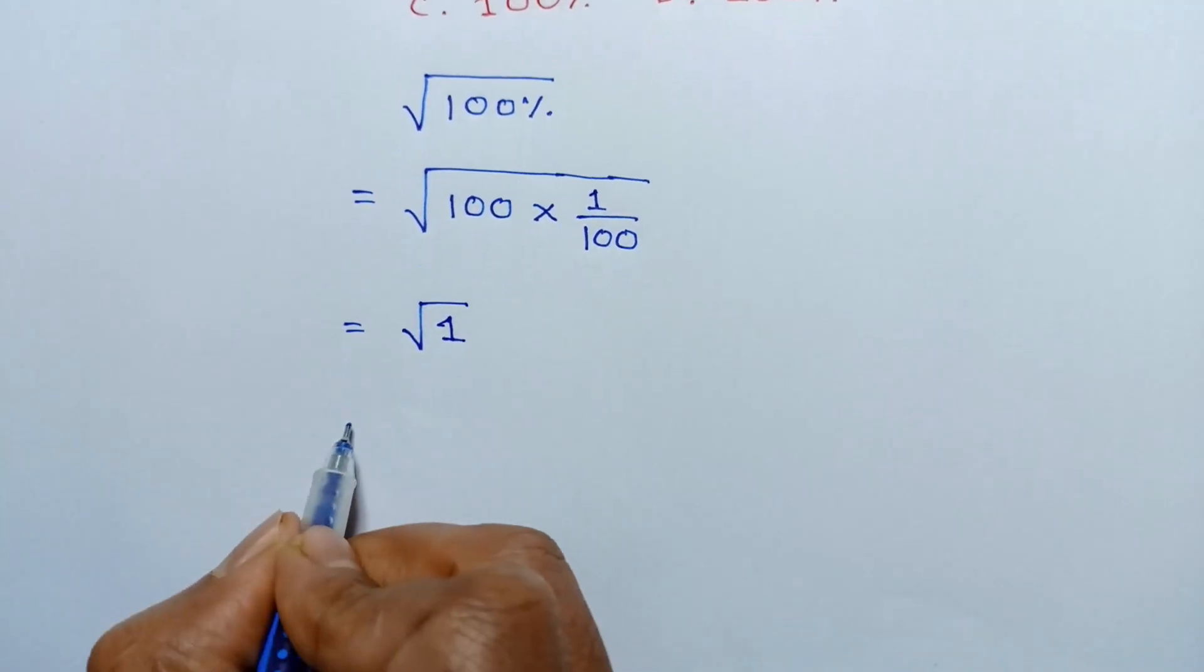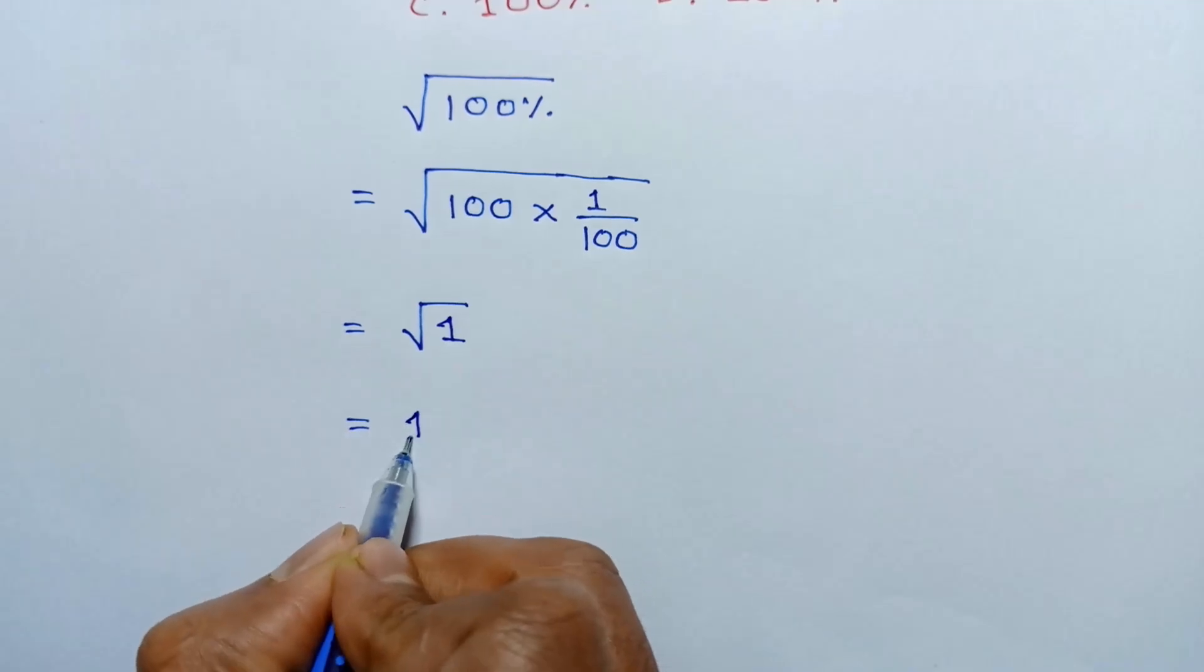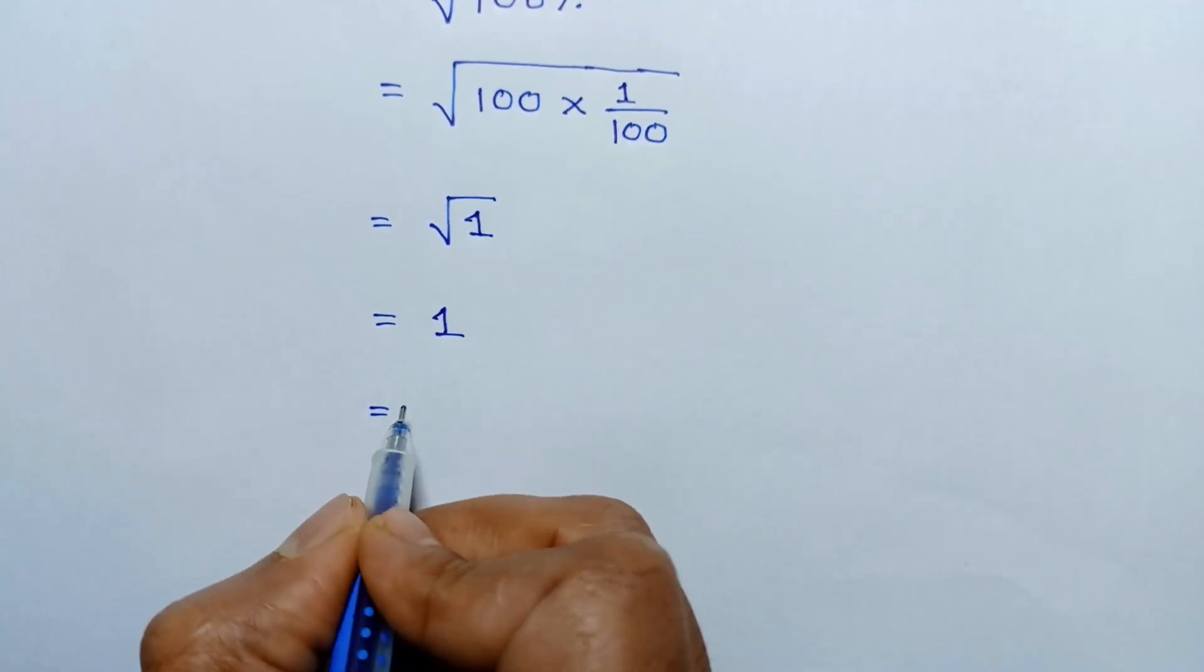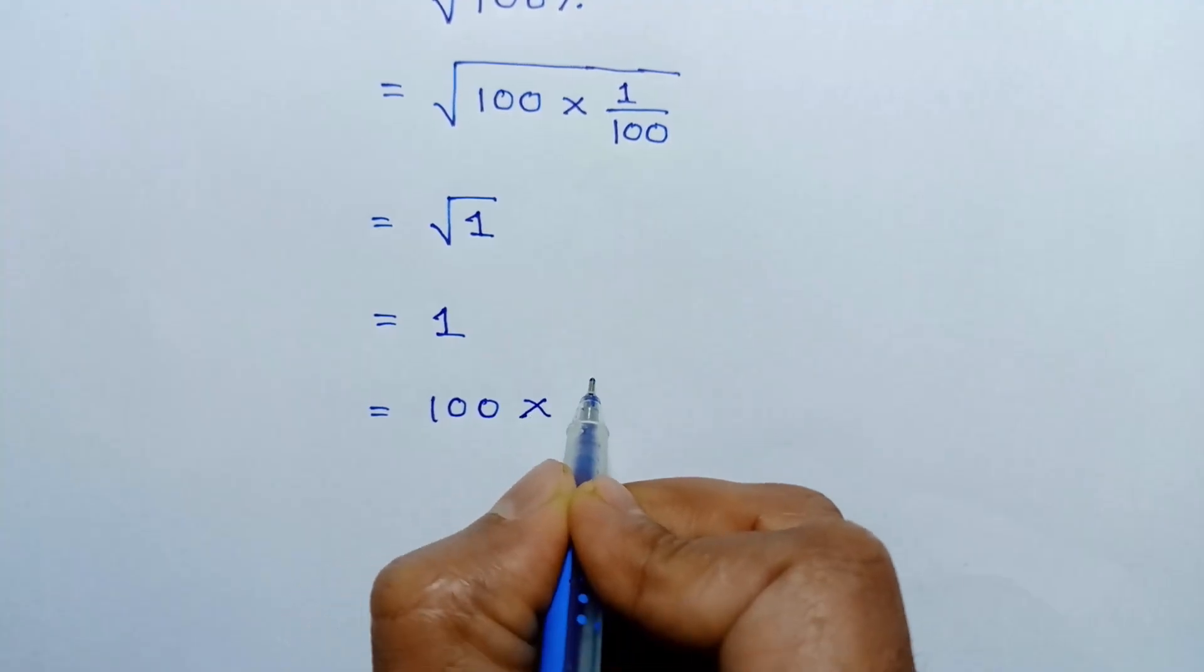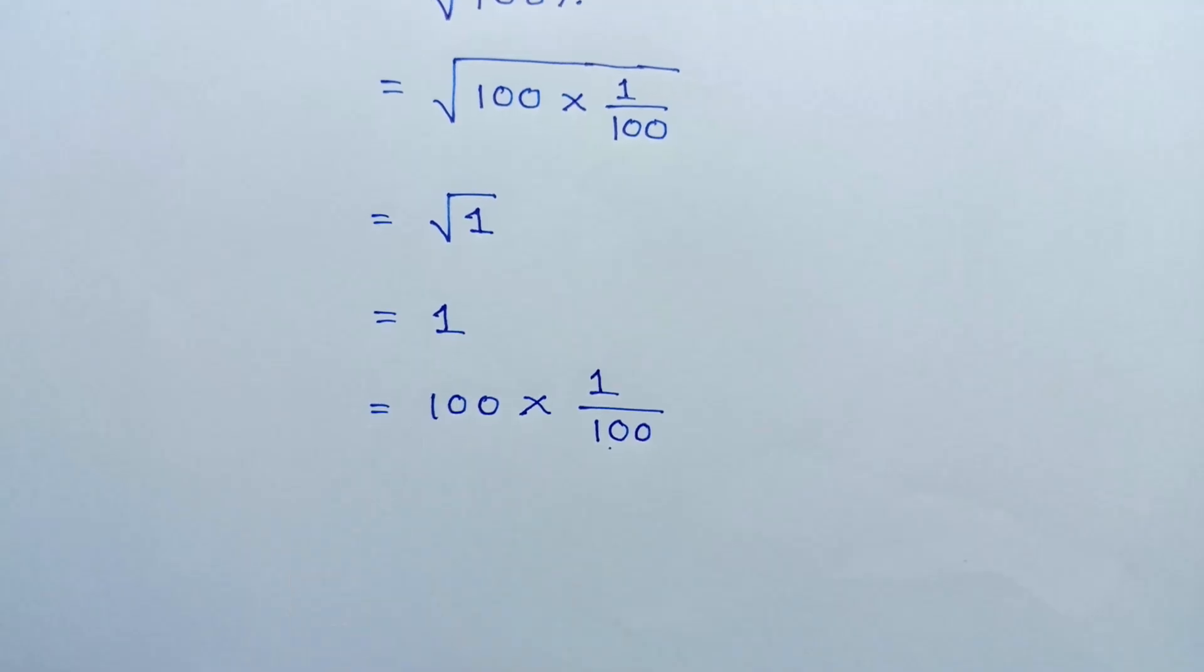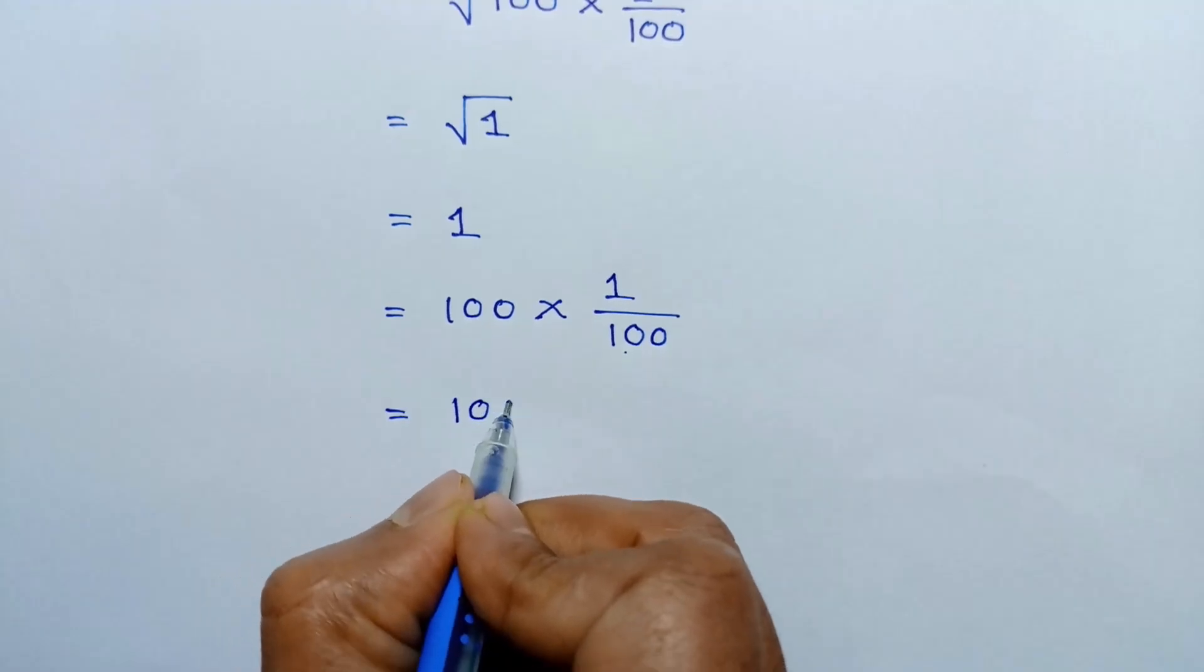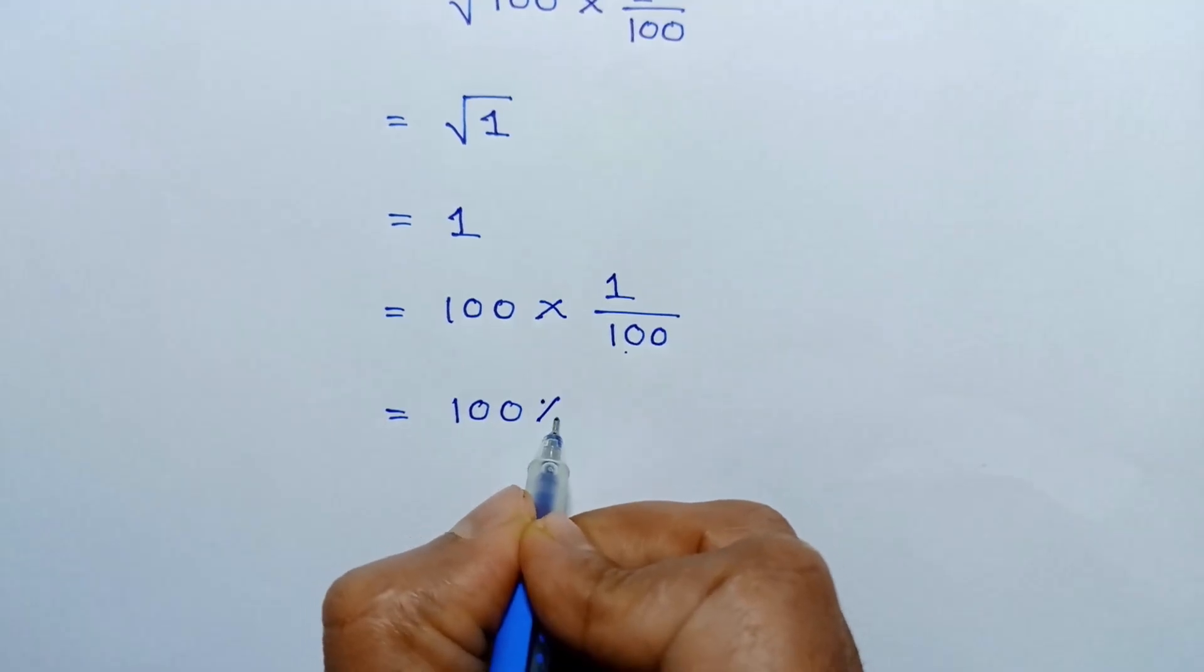Square root of 1 is 1. This 1 can be written as 100 times 1 over 100, so this 100 will cancel and it will remain as 1, which equals 100 times 1 over 100, and this 1 over 100 is percentage.